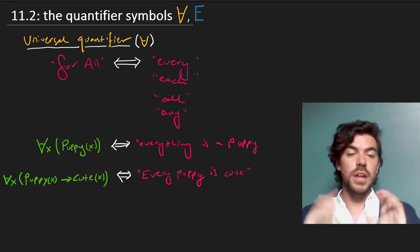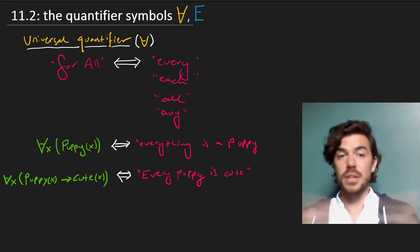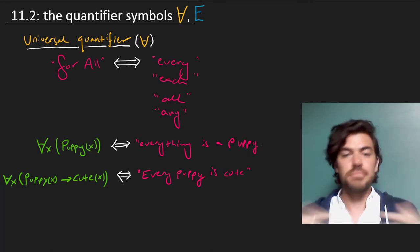Such then is the universal quantifier, which allows us to make these universal statements. Every puppy is cute, or every dog is a mammal, that kind of thing.